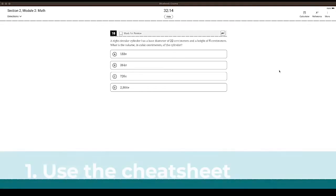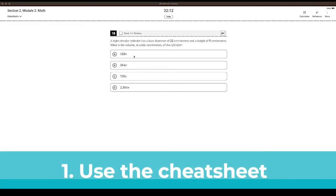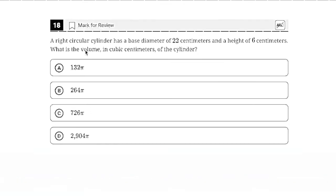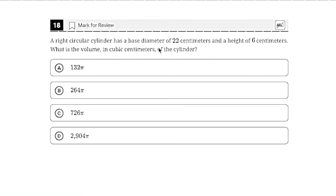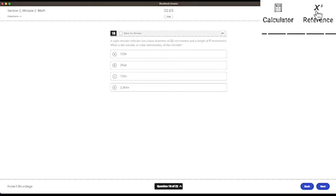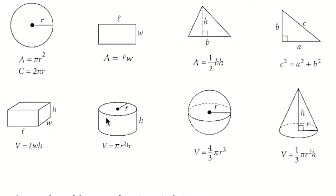Tip number one is to use your geometry cheat sheet. I'm hanging out here, I'm taking my exam, and they're asking me about the volume of a circular cylinder. I don't know what the heck that is, but boom, click on reference, and the formula's right there.